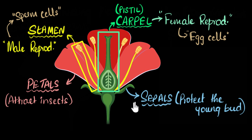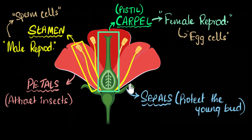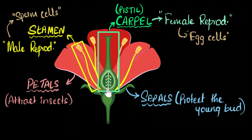So those are the four parts of the flower. In future videos, we'll look more closely at the carpel and stamen separately. Now, in this example, both the female and male reproductive parts are on the same flower — such flowers are called bisexual flowers. But in some cases, a flower will contain only the stamens or only the carpels. Since they contain only one reproductive part, we call them unisexual flowers.